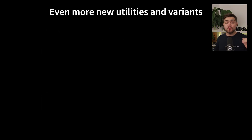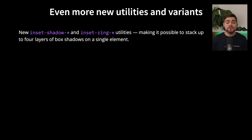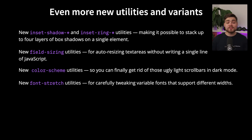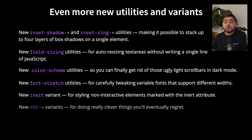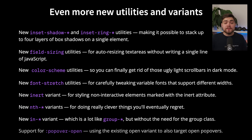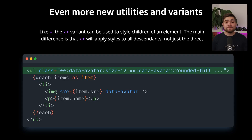That's already a whole load of new features, but let me quick-fire some more before moving on to what's changed. There are new inset shadow and inset ring utilities, new field-sizing utilities for auto-resizing text areas without JavaScript, new color scheme utilities, font stretch utilities for variable fonts, a new inert variant, nth variants, and a new variant similar to group but without needing the group class. There's support for popover-open. Finally, there's a new descendant variant for styling all descendant elements — this should be used as an absolute last resort when you can't control the descendants. Please don't go throwing this into Tailwind codebases; it takes away the magic of Tailwind being localized.